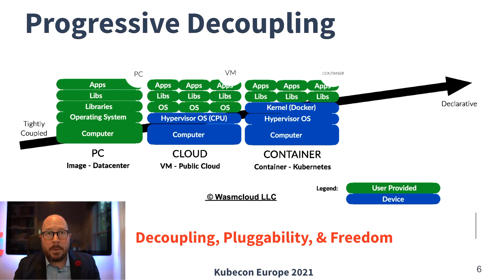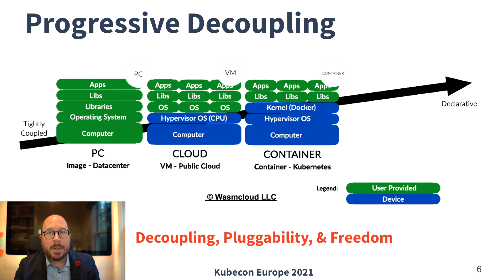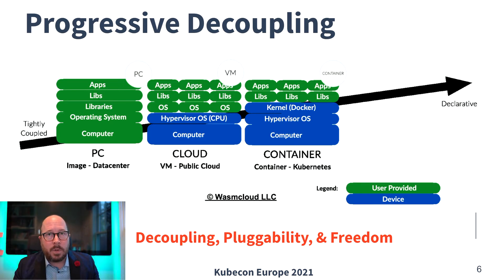Third, a further theme emerges: the underlying layers become increasingly portable through pluggability and extendability. The virtual machine, for example, frees us from a specific size and type of computer. And Kubernetes frees us from a specific size and vendor of cloud. Fourth, each wave continues to free us further from the assumptions built into the previous generation.